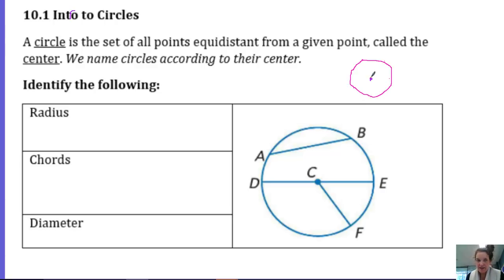And that point is called the center. And we name circles according to their center point. So this circle has a center at C, that point that's marked with the dot is there to communicate that that's the center. So this would be circle C.